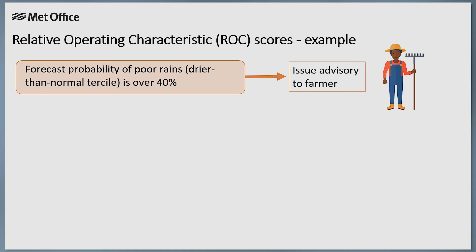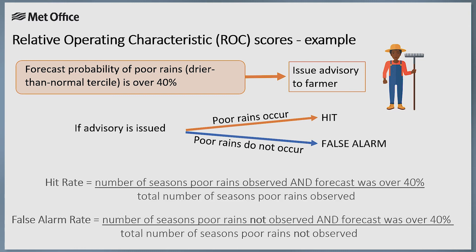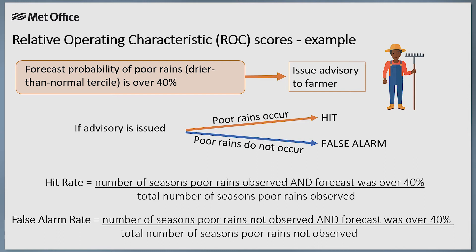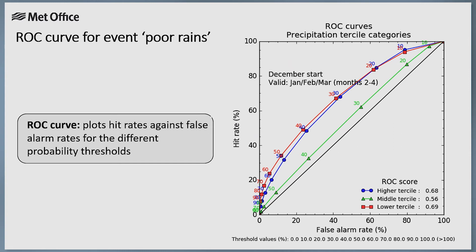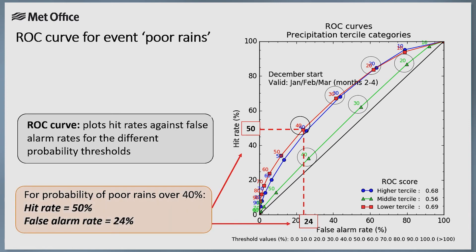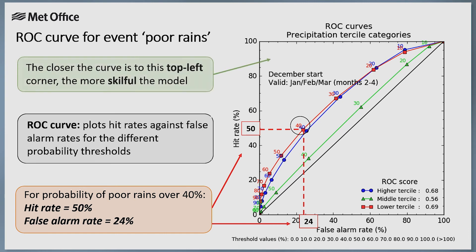By looking at many cases, a hit rate and a false alarm rate can be calculated to measure forecast performance. Plotting the hit and false alarm rates against one another is called a ROC curve. In this example, when the probability of poor rains — the lower tercile — is 40%, the hit rate is 50% and the false alarm rate is 24%. This can be repeated for other probability thresholds, forming a curve. For a skilful forecast, hit rates must exceed false alarm rates, so when the curve is closer to the top left corner, this indicates a more skilful forecast model. The total area under the curve is a summary statistic of overall performance called the ROC score — in this example, the ROC score is 0.69.